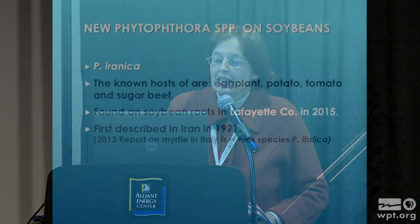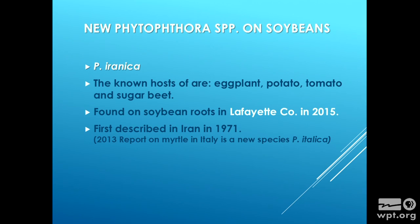Another commonality of these new species is that they're often found in combination with Phytophthora sojae or Phytophthora sansomiana, which might indicate they're more opportunistic — but we really don't know that. Phytophthora iranica has been known since 1971 from Iran. We found it in Lafayette County in 2015. Its known hosts are eggplant, potato, tomato, sugar beets, and more solanaceous crops.